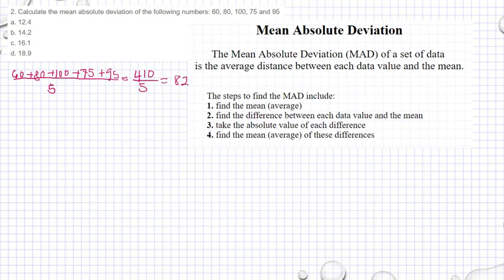I have a mean of 82. That's step 1. Step 2: find the difference between each data value and the mean. So we have absolute value of 60 minus 82. I am doing steps 2 and 3 at the same time.